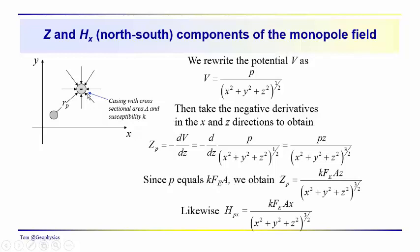That would be the area of the well casing near the surface. So then we obtain the vertical component is equal to K times the Earth's magnetizing field strength. We assume that this is the field which is magnetizing the object times the cross-sectional area times z over x squared plus y squared plus z squared to the three-halfs power.